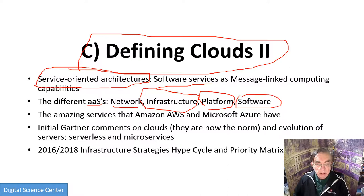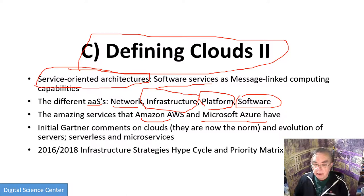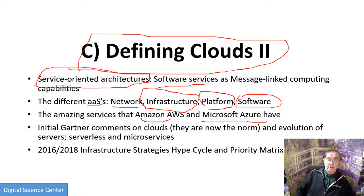We highlight that Amazon and Microsoft have an amazing and ever-growing number of services. There are so many services that not only can you not keep track of what they offer, but nobody can compete — whether you're a university computer center or a digital science center, you simply can't offer anywhere near the number of services these providers have.